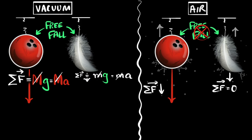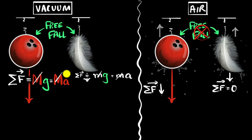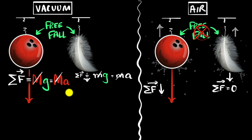So, long story short: when things are in free fall — meaning gravitational force is the only force acting on them — all objects accelerate at the same rate, the acceleration due to gravity, regardless of their mass. But if there are other forces acting on them, then we'll have to analyze each case.